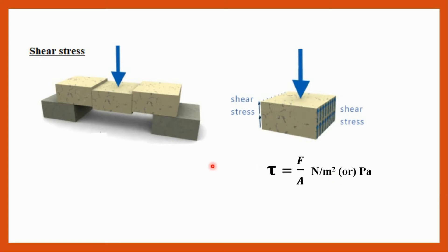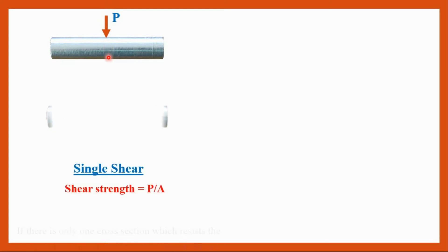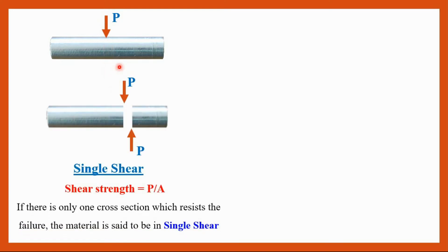Now I will move on to the difference between single shear and double shear. What do you mean by single shear? If I have a specimen and it is subjected to load, then only one cross sectional area is resisting the failure. So that material is in single shear. We are having only one resistance — one cross sectional area resisting the force. So this we can call it as single shear.